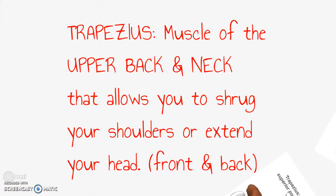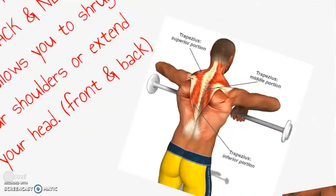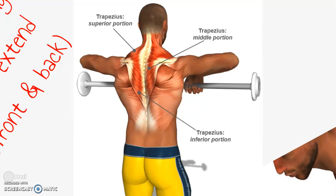Next is the trapezius. This is the muscle of the lower neck and upper back. It allows you to shrug your shoulders and extend your head forward. It can be seen from the front and the back view as well. This exercise is called an upright row. Another simple exercise to work the trapezius is to simply shrug your shoulders. Also, if you've ever gotten a massage on your shoulders, it was likely on your trapezius muscle. We hold a lot of tension and stress in our necks and trapezius region — that's why a massage feels so good there. You're releasing all that stress and tension.